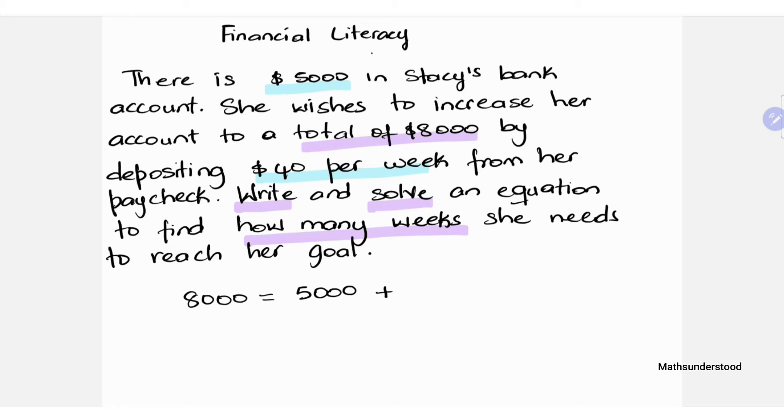Now we also know that she wishes to deposit $40 per week from her paycheck. Do we know how many weeks? No we don't, so we may use a variable to represent however many weeks that will be. So we'll be adding here 40 times X, bearing in mind that X represents the number of weeks.